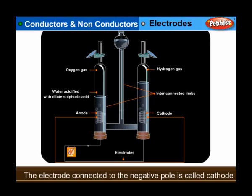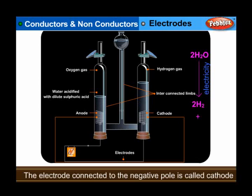The acid produces H+ and SO4 2- ions, while water produces a small number of H+ and OH- ions. When the electric current is switched on, the positively charged H+ ions reach the cathode. Each H+ receives an electron from the cathode and forms a hydrogen atom: H+ + e- gives H. Hydrogen atoms do not normally exist alone, and pairs of atoms unite to form a hydrogen molecule: 2H gives H2.